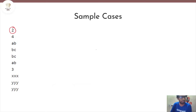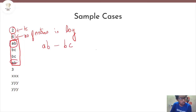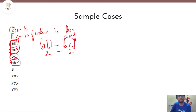Let's look at a few sample cases. There are two sample cases. This number indicates entries in the score log, and this is the number of test cases. Looking at the first case with four entries, the match is played between teams AB and BC. Team AB scored one goal and two goals — wait, team AB scored one goal and team BC also scored two goals. So this is a tie because the count of AB is two and the count of BC is also two, meaning this game was a tie.